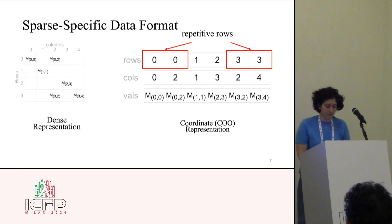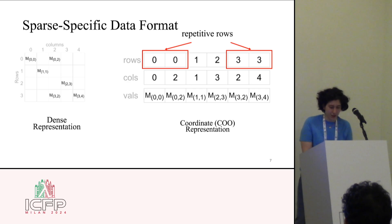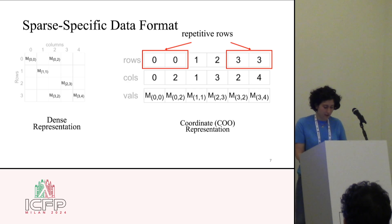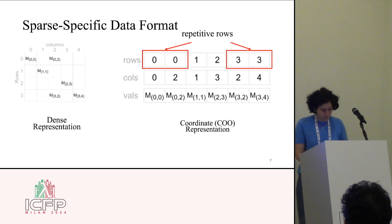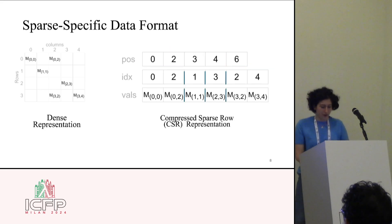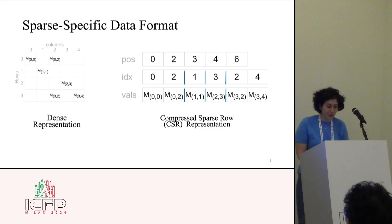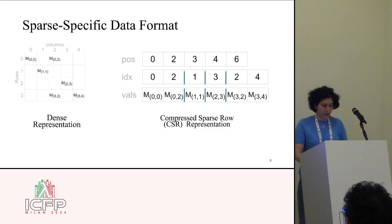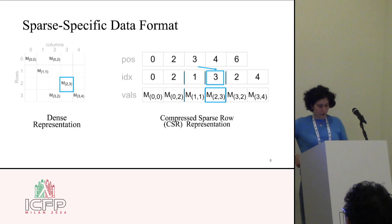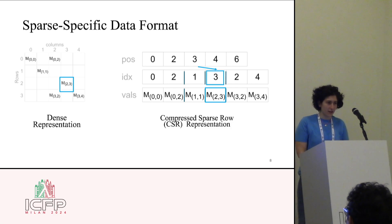The problem with COO representation is that we allocate multiple rows in the row array, which could be eliminated by compressed sparse row (CSR) representation, which compresses the row array and uses it as a pointer to the associated indices and values for that specific row.